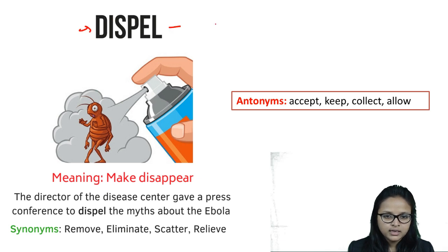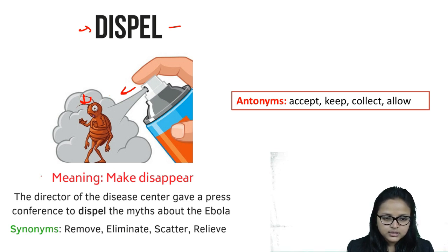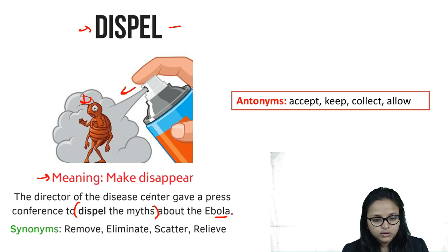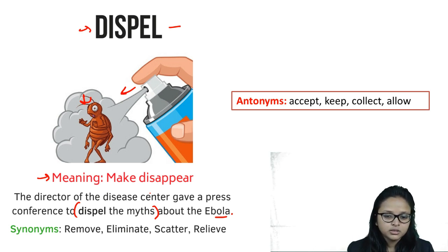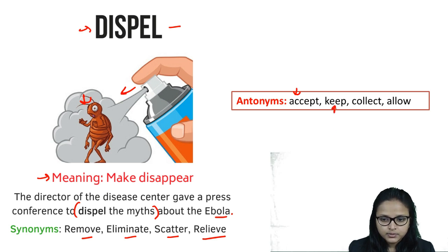'Dispel' means to make something disappear — like spraying anti-cockroach medicine to make a cockroach disappear. It means you are trying to remove something, scatter something, or get rid of something. For example: 'The director of the disease center gave a press conference to dispel the myths about Ebola' — meaning he wanted to remove all the myths about the virus. Synonyms: remove, eliminate, scatter, relieve. Antonyms: accept, collect, allow. Dispel is a verb.